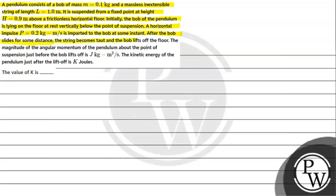the string becomes taut and the bob lifts off the floor. The magnitude of the angular momentum of the pendulum about the point of suspension just before the bob lifts off is j kg meter squared per second. The kinetic energy of the pendulum just after the lift off is k joules. The value of k is?